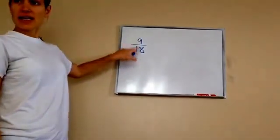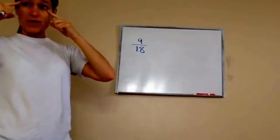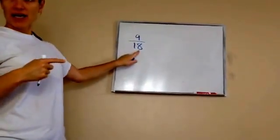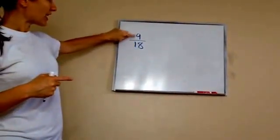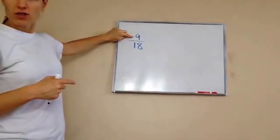Because nine is half of eighteen. So we can recognize it real easily just by looking at it because if we know that half of eighteen is nine, then we know this is half of the pizza. Do you see what I'm saying?